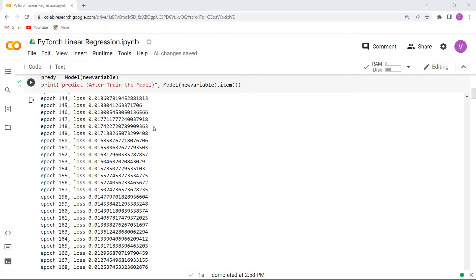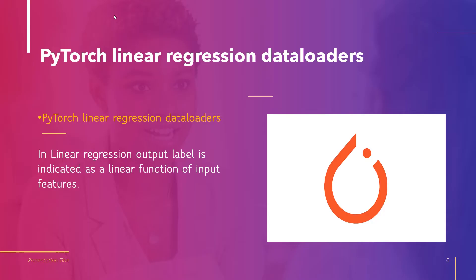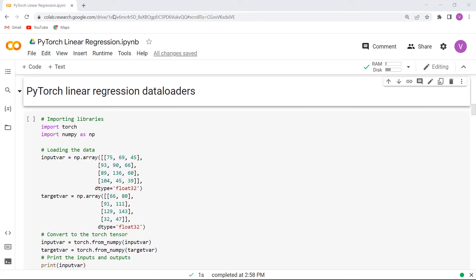Now let's discuss PyTorch linear regression data loaders. A linear regression output label is indicated as a linear function of input features using weights and bias, and these weights and bias are the model parameters. We will understand this concept with the help of an example.